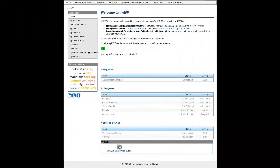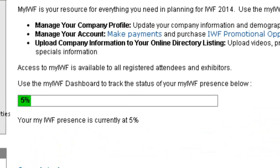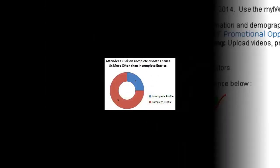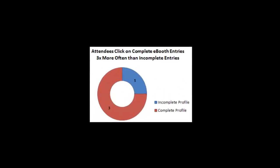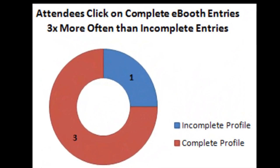With so many opportunities to connect with attendees before the show, updating your eBooth information is critical to ensure that one-to-one interactions with them on the show floor are meaningful and productive. Historically, attendees click on updated eBooth listings three times more often than on incomplete listings. Just as you would not leave your booth empty and unstaffed on the exhibit floor, do not leave your eBooth empty and uninviting. Take advantage of this free opportunity to stand out from the competition, to build quality pre-show leads, and to maximize your ROI from the event.